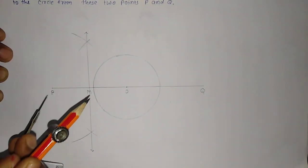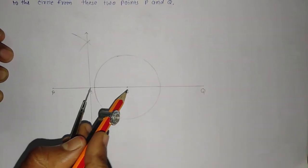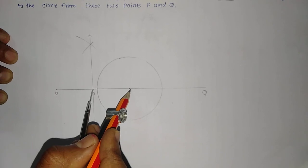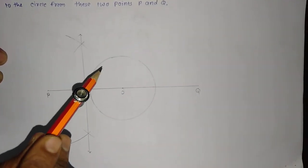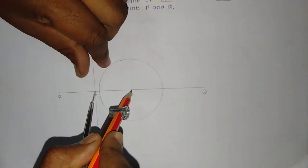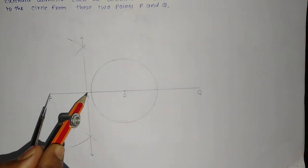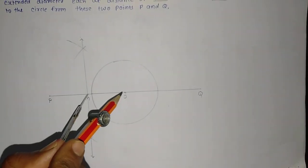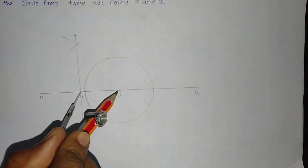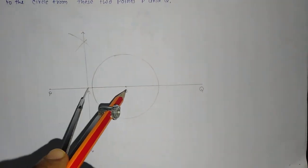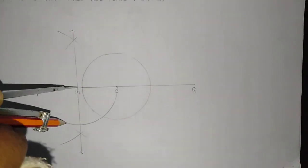Now we take the measure from P to M, or M to O — both distances are the same because M is the midpoint. I will take M as center and MO (or MP) as radius and draw a circle.